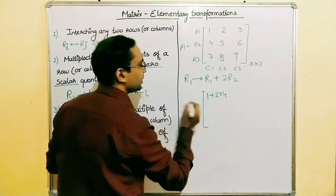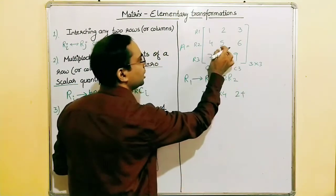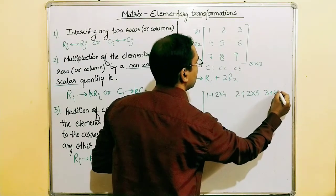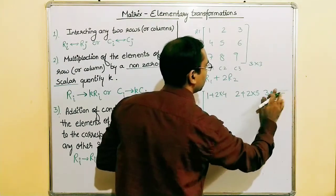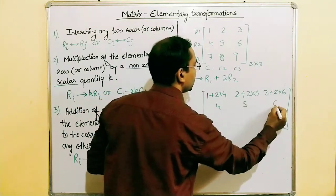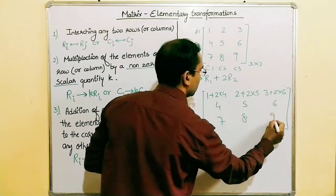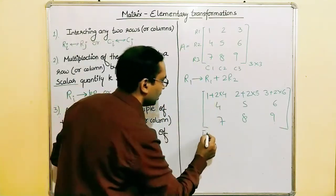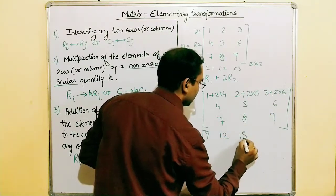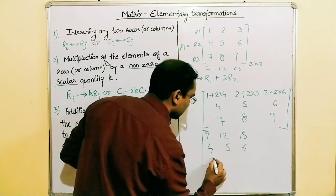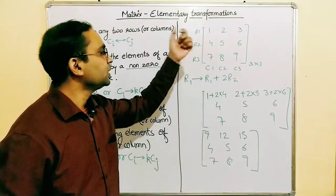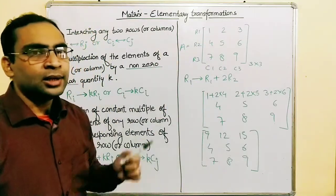Performing R1 → R1 + 2·R2: the new first element is one plus two times four, the second is two plus two times five, and the third is three plus two times six. Calculating: one plus eight is nine, two plus ten is twelve, three plus twelve is fifteen. The remaining rows stay the same — four, five, six and seven, eight, nine. The resulting matrix is equivalent to the original.